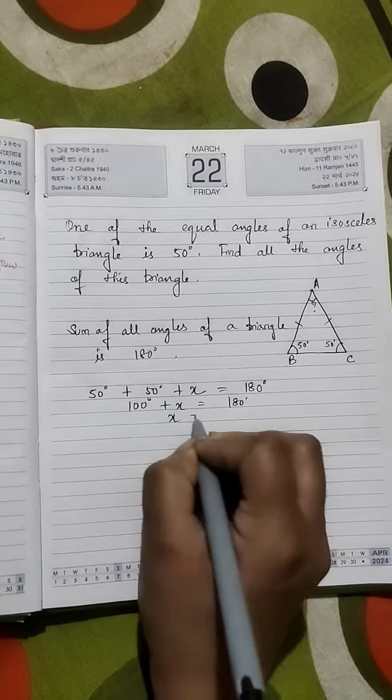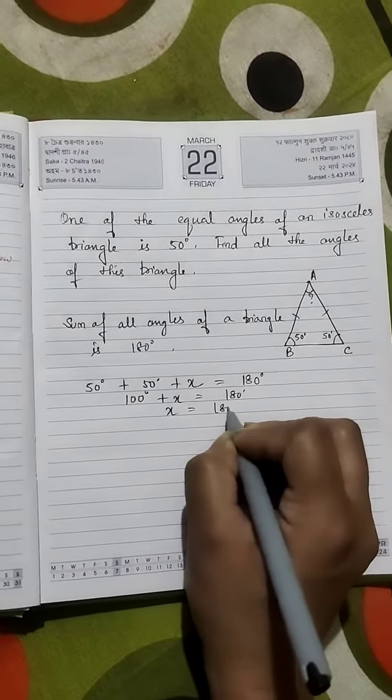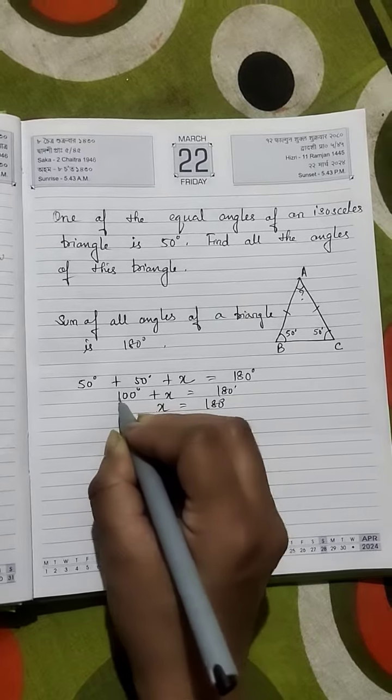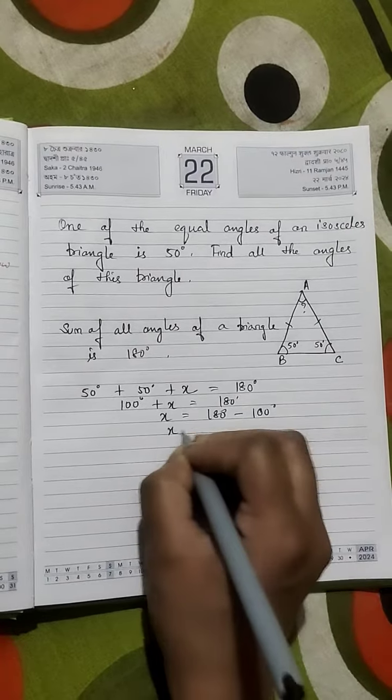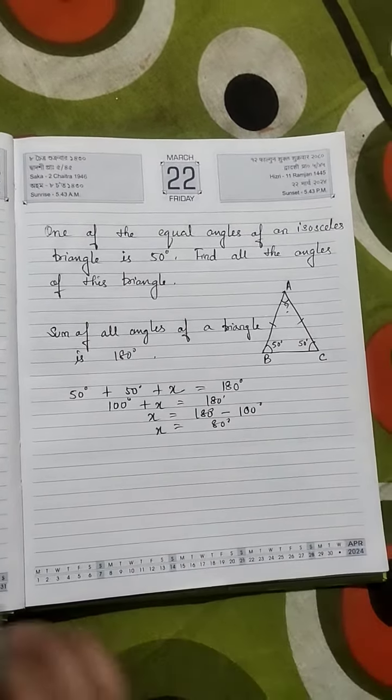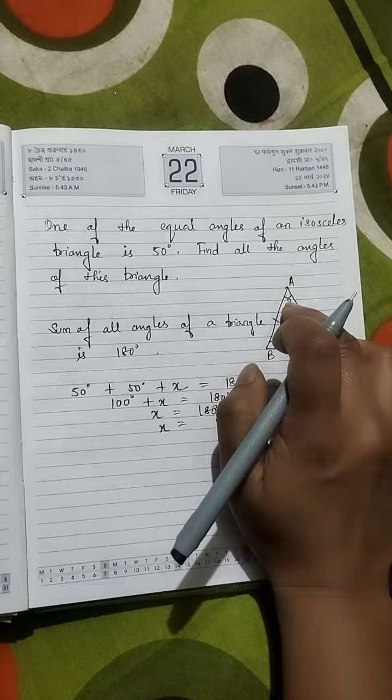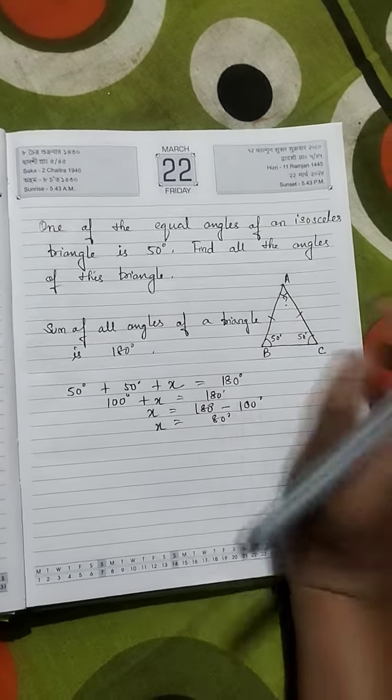So x will remain on this side equals to, and we'll write 100 on the other side. Since it's plus here, we'll subtract on the other side. So x equals 80 degrees. So the unknown angle is 80 degrees.